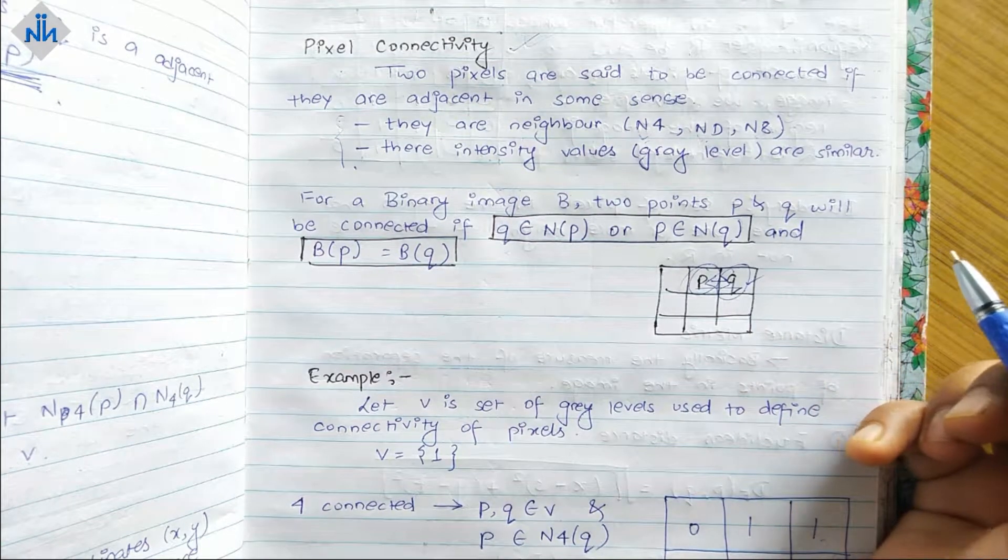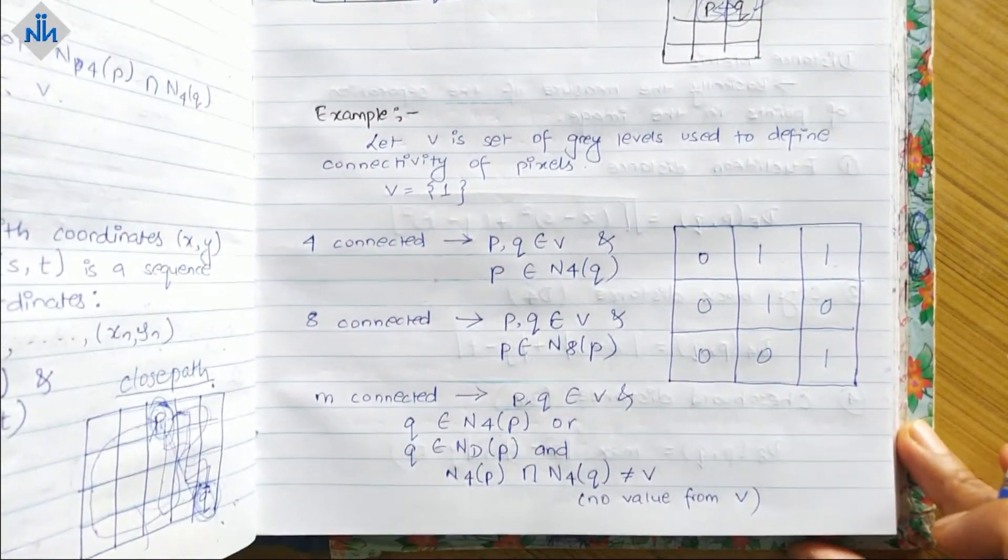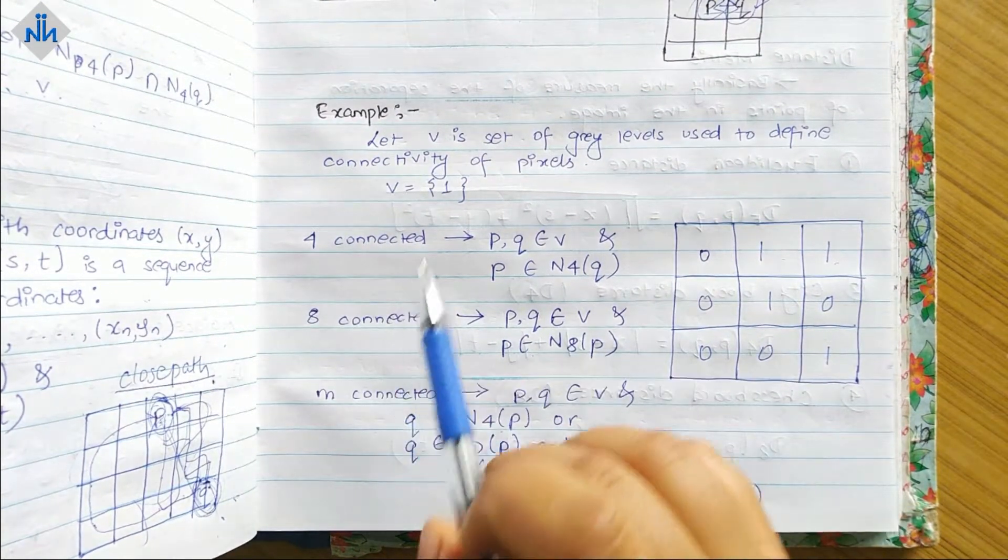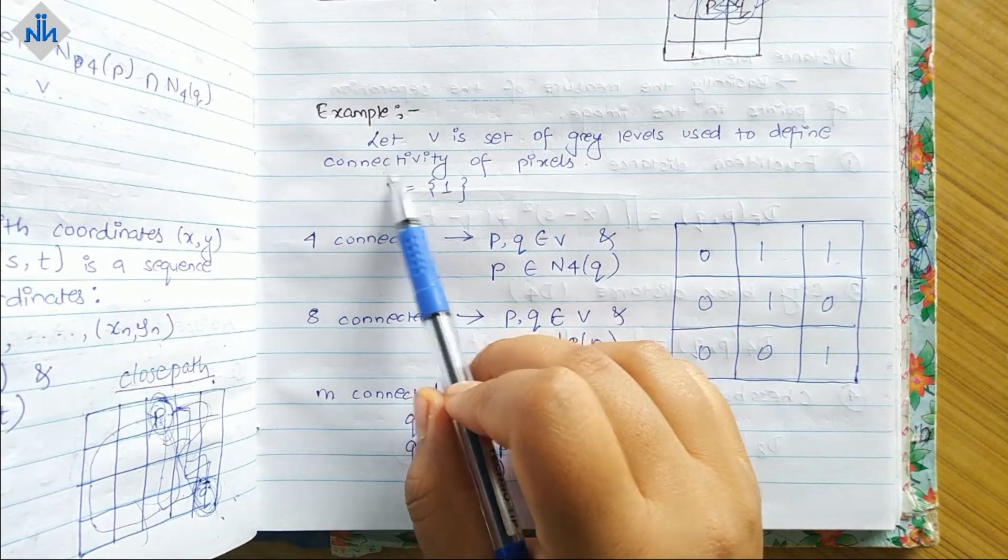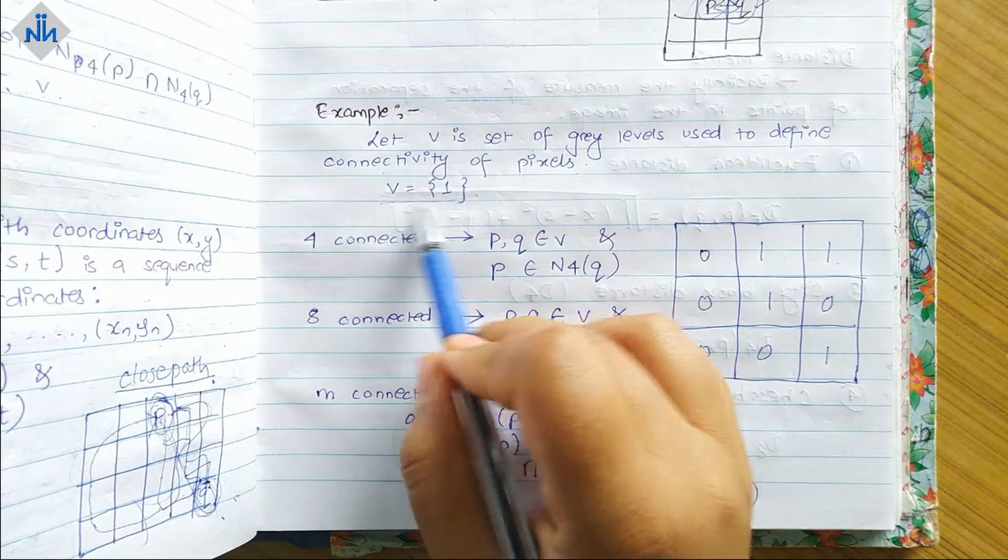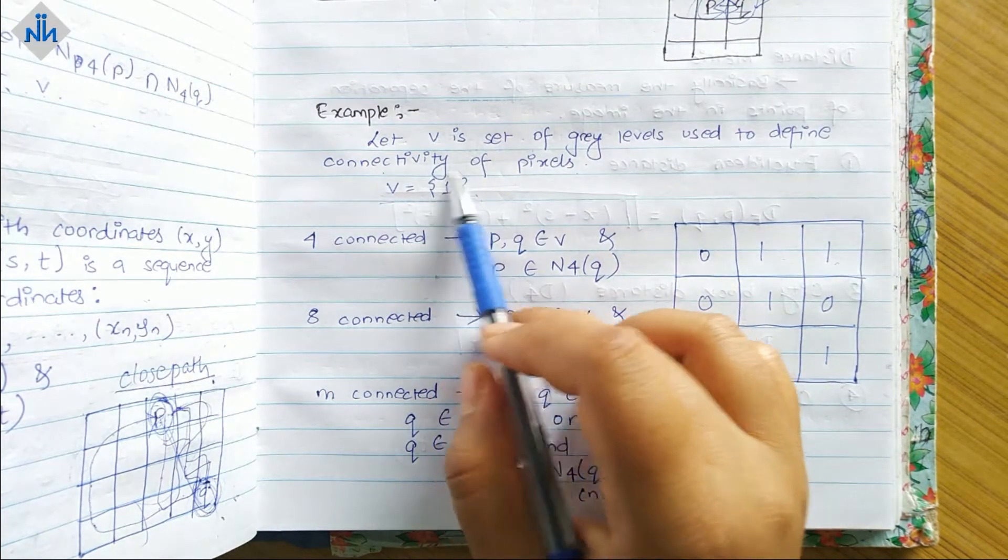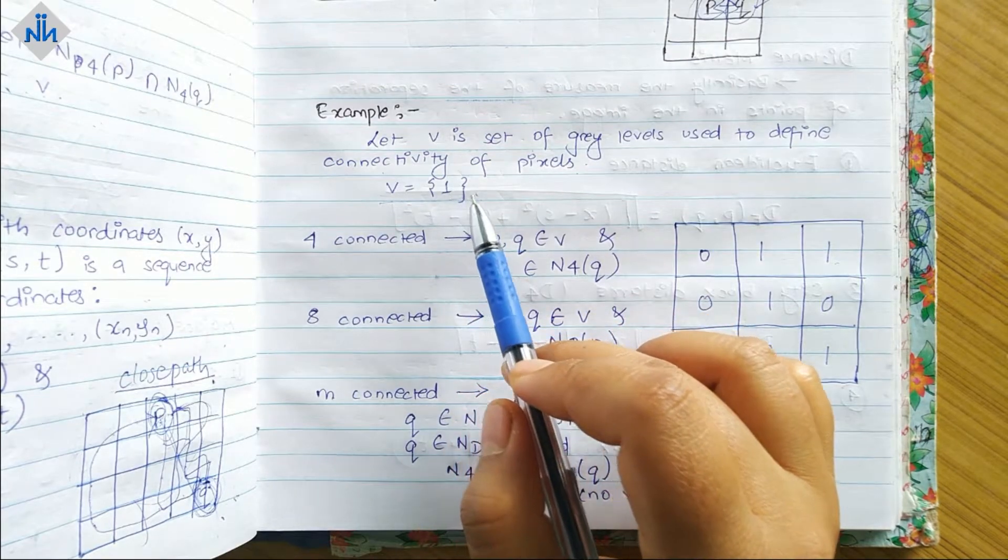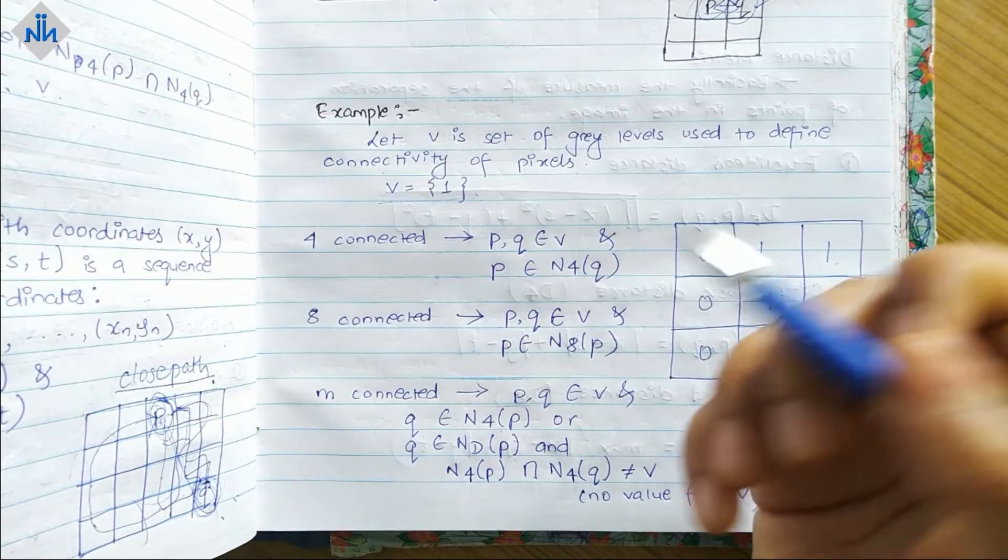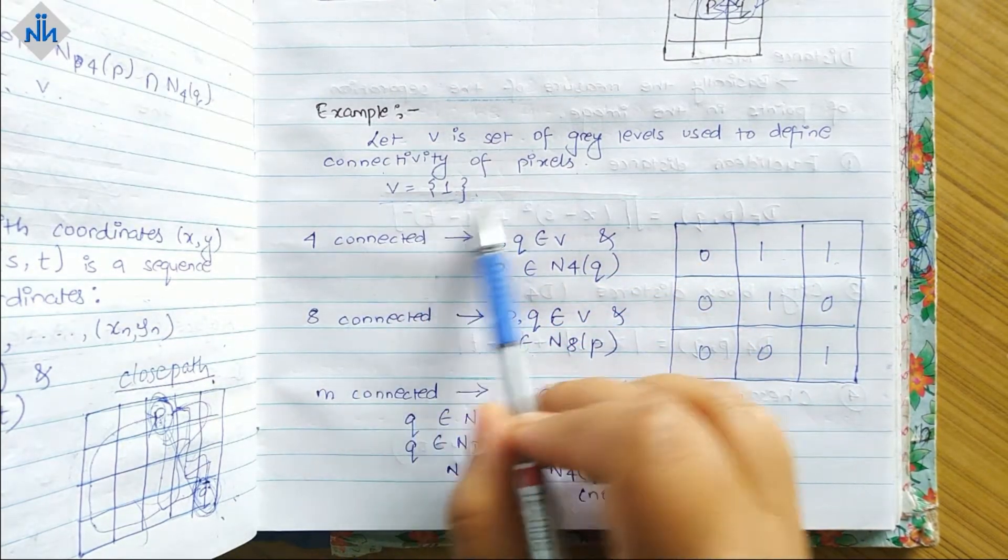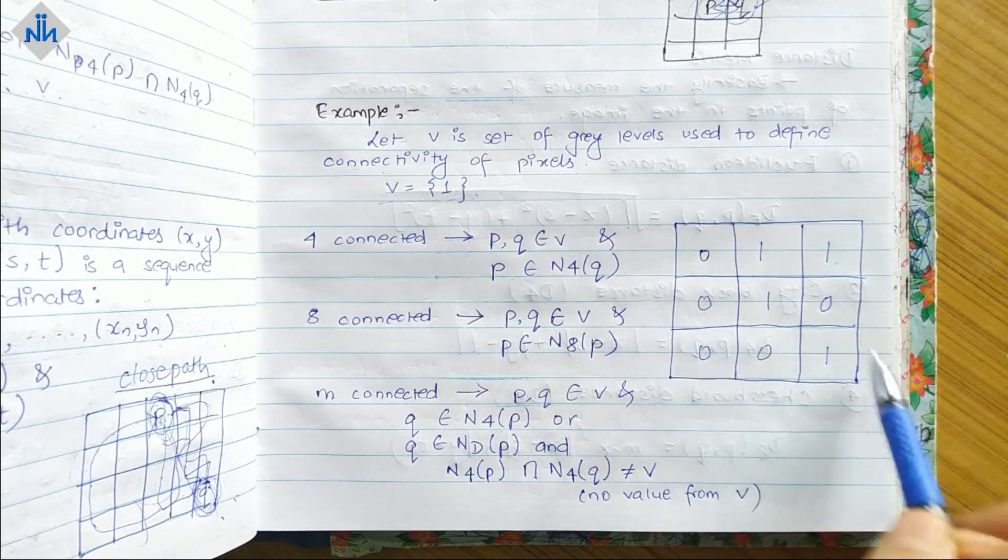Now let's take a look at an example. Here let V is a set of gray levels used to define connectivity of pixel. We have seen what V is in M adjacency as well. Basically this is giving us the pixel value which will define the connectivity between two pixels, so it should be one in this case. This is our image and these are our values.